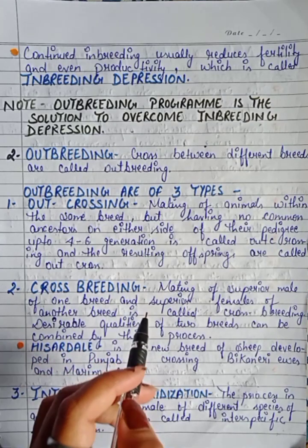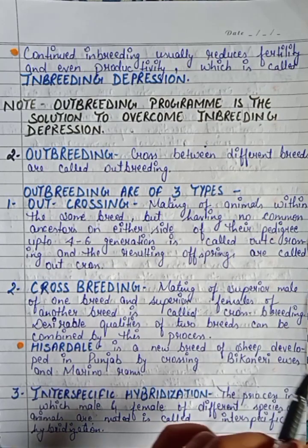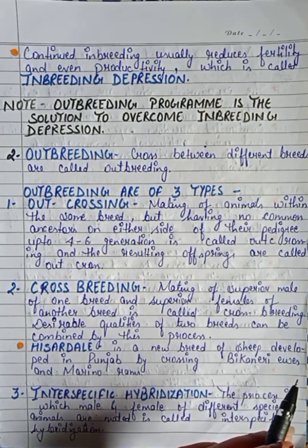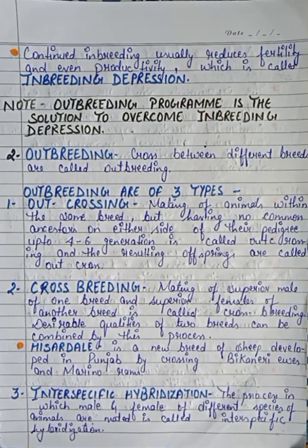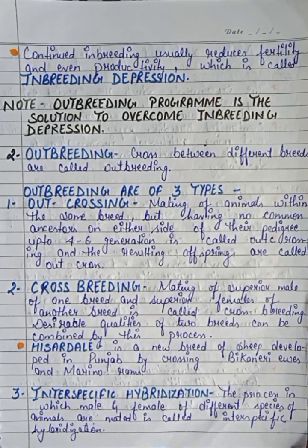Second is crossbreeding: mating of a superior male of one breed with a superior female of another breed is called crossbreeding. Desirable qualities of two breeds can be combined in this process. For example, Hisar is a new breed of sheep developed by crossing Bikaneri ewes and Merino rams.